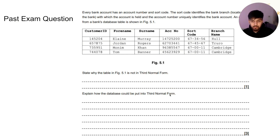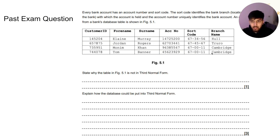Here's a past paper exam question — pause the video and have a go, then we'll go through the answers. 'State why the table in Figure 5.1 is not in Third Normal Form.' In Third Normal Form, every field must depend on the primary key. This is not the case here, as branch name depends on sort code — the question tells us that sort code identifies the branch, so branch name depends on sort code.